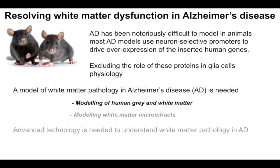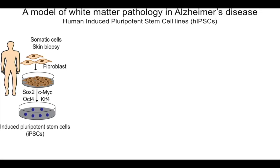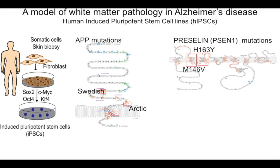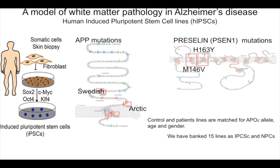We collaborated with the Karolinska Institute to obtain fibroblasts from patients. We got patient lines with the APP mutation and Presenilin mutations. Importantly we could get matched control and patient lines — all genotyped by sequencing and including family members such as brothers, sisters, mothers, daughters. We've banked 15 lines from Karolinska, generated neuronal progenitor cells, and have clinical records confirming all patients have white matter lesions.